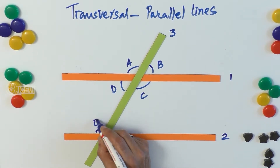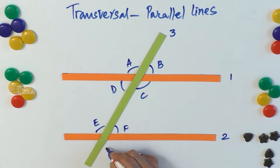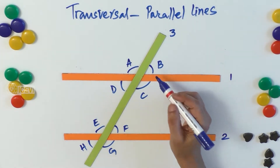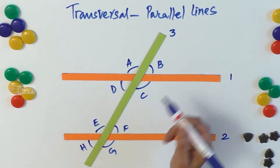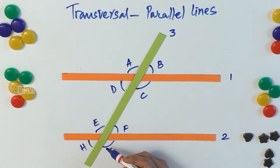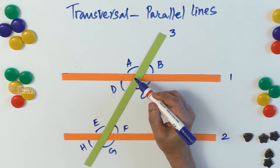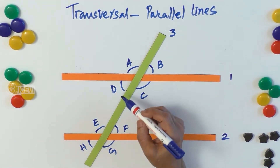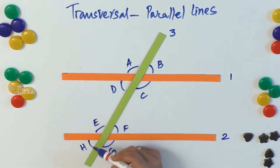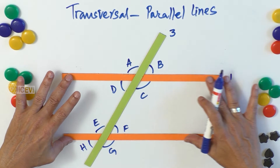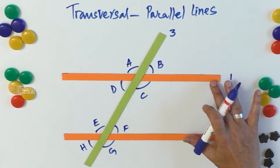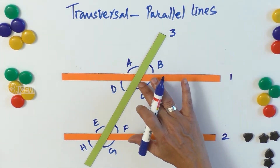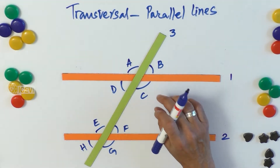Now taking the transversal three and line two, we get four angles: e, f, g, and h. The corresponding angles are b and f, the next set is c and g, the third set is a and e, and the fourth set is d and h.